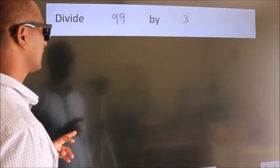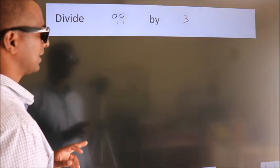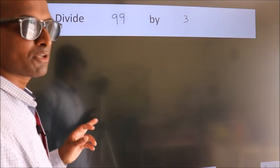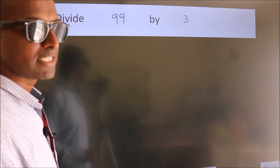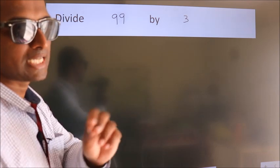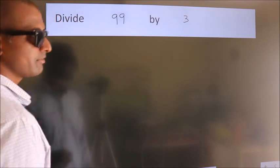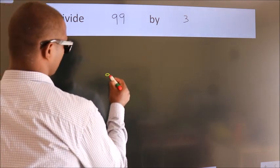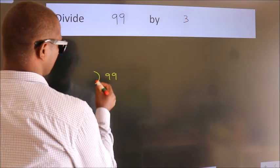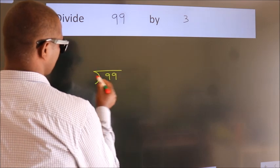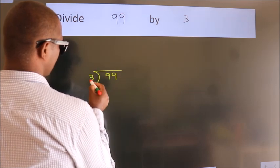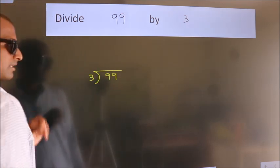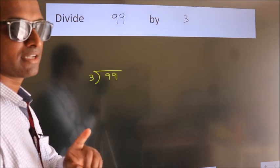Divide 99 by 3. To do this division, we should frame it in this way: 99 here, 3 here. This is your step 1.